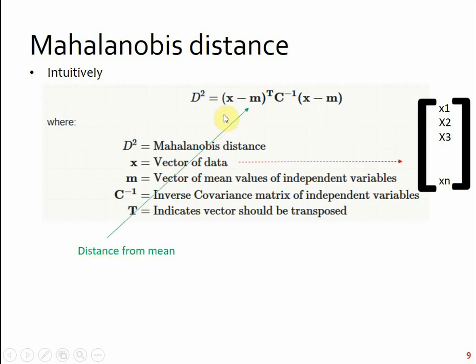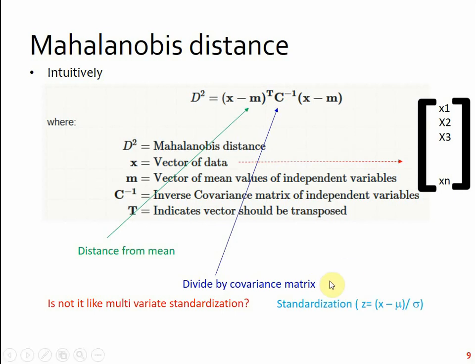Now, if you look at here, you are taking distance from mean, that's the first part. Second part, you are dividing by covariance matrix. And how does it help? If you look at, isn't it like multivariate standardization? Think of, in case of standardization, what do you do? x minus mu, so essentially you take distance from the mean and you divide by the standard deviation. Here, if you look at, you have x matrix, obviously, like you're not having one dimension. You have multiple dimensions. And similarly, you have mean matrix. And then what are you dividing? You are dividing by covariance matrix. So essentially, you are dividing by, you are trying to do a multivariate standardization.